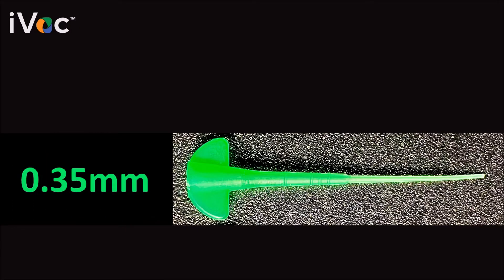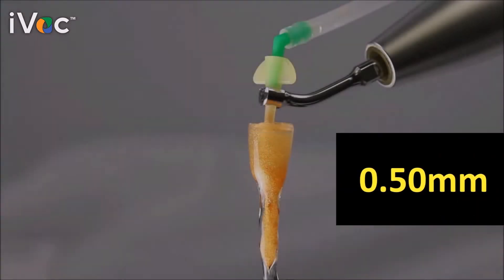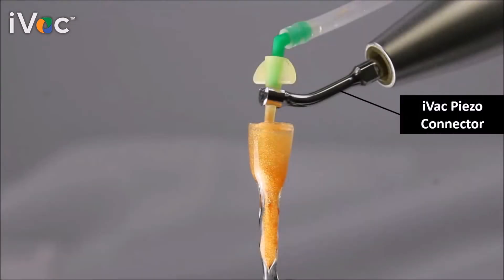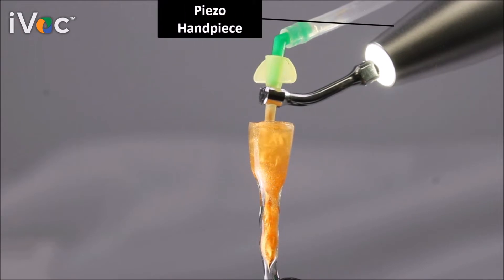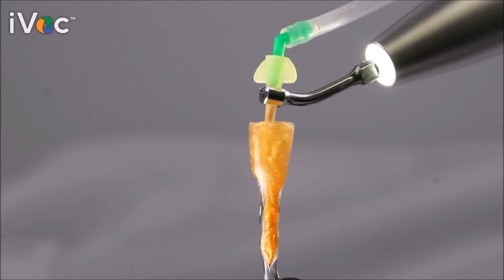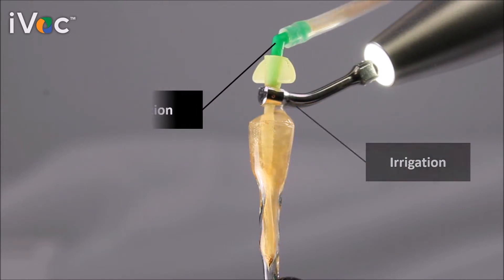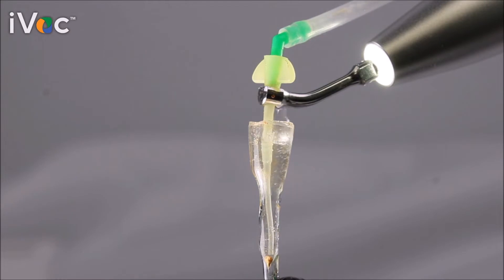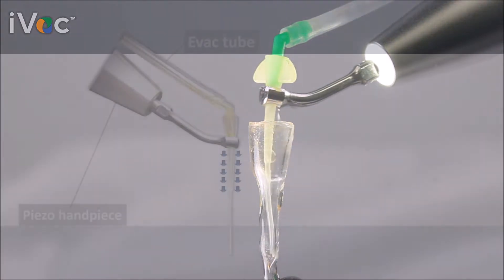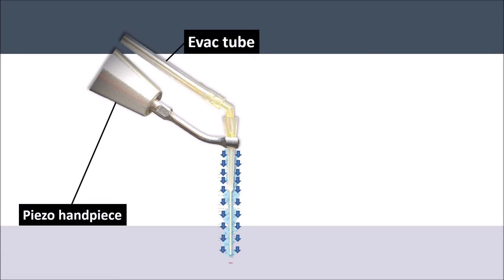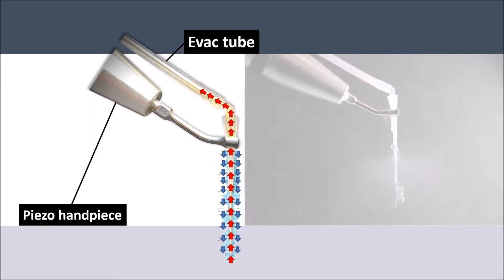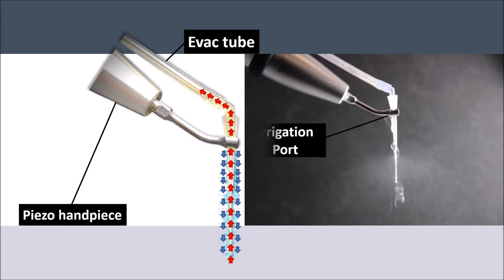The iVac system consists of a tapered 0.35 and 0.50 diameter polymer cannula self-threaded to a piezo-ultrasonic connector. The connector is coupled to a piezoelectric ultrasonic handpiece, providing vibrations to the iVac cannula and delivering concomitant irrigation from the reservoir. Low-vac suction is connected to the iVac, providing suction at the tip of the cannula. The vibration helps carry irrigation fluid throughout the canal extension alongside the external cannula surface and is recollected via the apical opening.